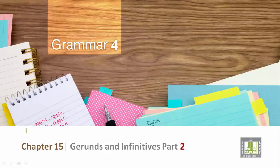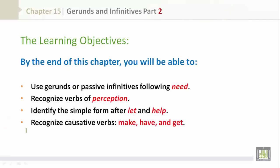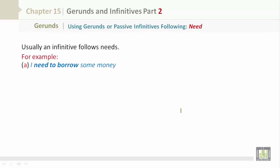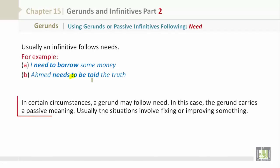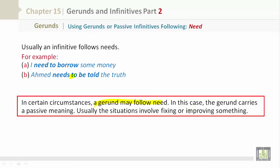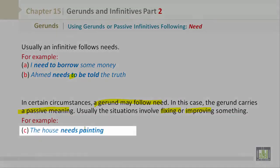Grammar 4, Chapter 15: Gerunds and Infinitives, Part 2. Learning objectives: use gerunds or passive infinitives following 'need,' recognize verbs of perception, identify the simple form after 'let' and 'help,' and recognize causative verbs such as make, have, and get. Usually an infinitive follows 'need': 'I need to borrow some money.' 'Ahmed needs to be told the truth.' In certain circumstances a gerund may follow 'need,' carrying a passive meaning — usually when the situation involves fixing or improving something. For example: 'The house needs painting.'